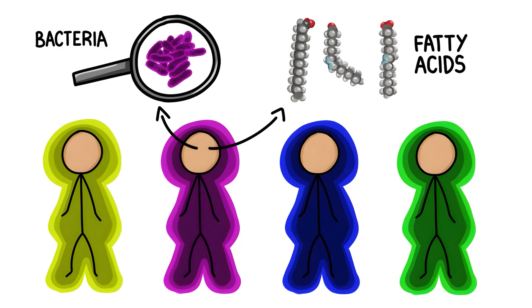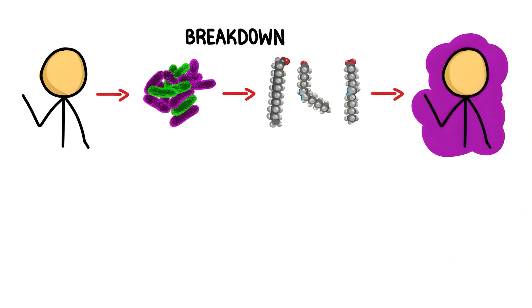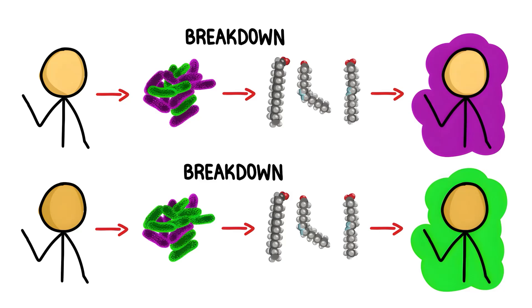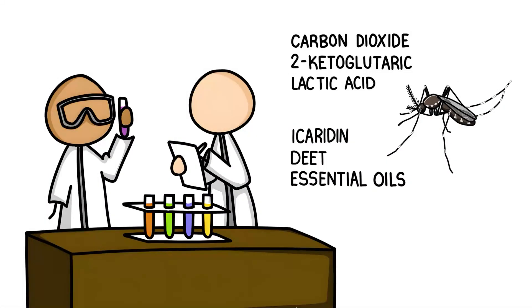This is because fatty acids accumulate on the skin of every human being. The individual composition of the bacteria on a person's skin, which break down these fatty acids and thus produce odors, also produce very different body odors. Researchers have now succeeded in identifying various chemicals that mosquitoes like or dislike.